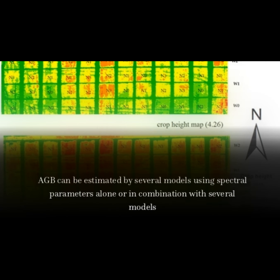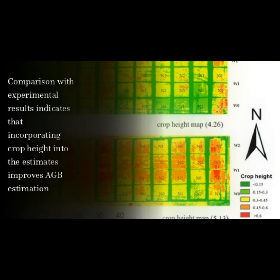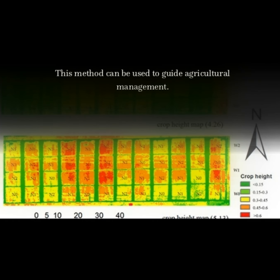AGB can be estimated by several models using spectral parameters alone or in combination with other variables. Comparison with experimental results indicates that incorporating crop height into the estimates improves AGB estimation. This method can be used to guide agricultural management.